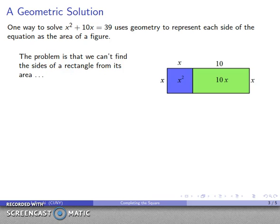Well the problem is that given the area of a rectangle, given that I know the area of this rectangle is 39, I'm not going to be able to find the lengths of the two sides of the rectangle unless I happen to have a square. The problem is what I have is not a square. It's x by x and then some, so this thing is definitely not a square.